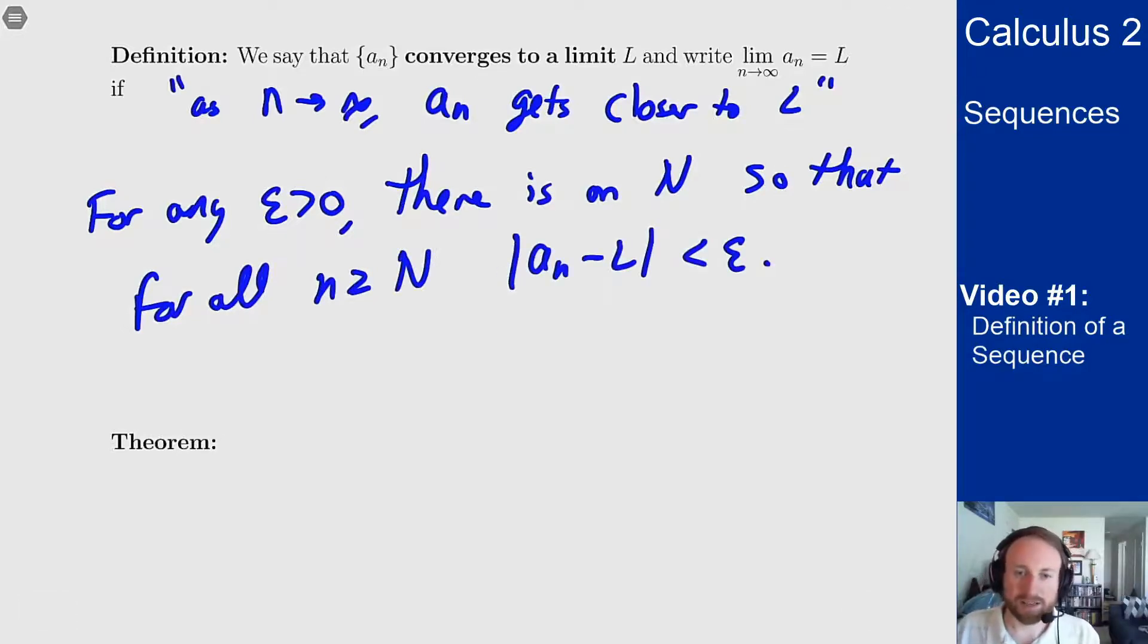The point here is, no matter what window I give you, you can always find some point far enough out in the sequence where everything beyond that point is close enough to L. That's the idea of convergence to a limit.